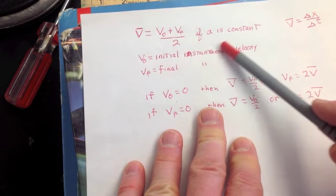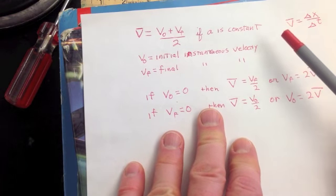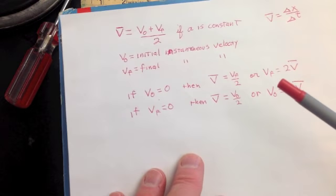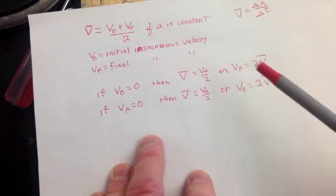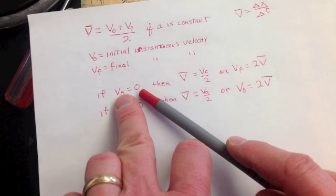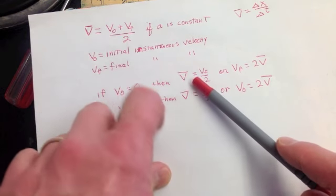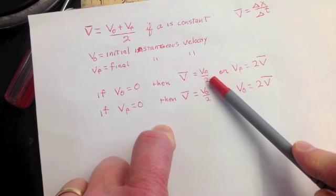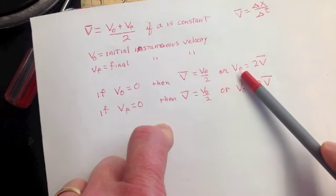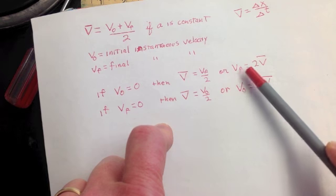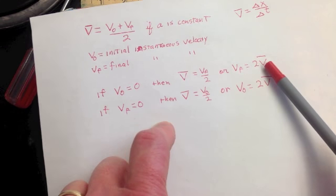And this situation is, the acceleration will be constant in all the labs that we do. So if V₀ is zero, then I just plug a zero in here for V₀, and I get the average velocity is Vf over two, which solves that the final velocity is equal to twice my average.